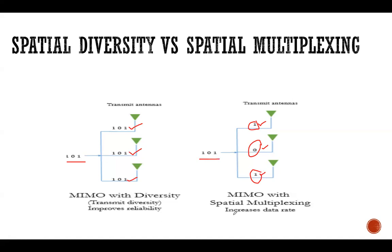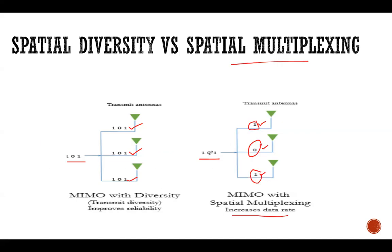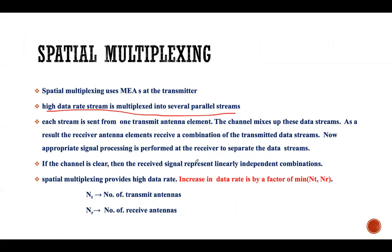By doing this, we tend to increase the data rate, and when we increase the data rate, the link capacity also increases — that is the important advantage of spatial multiplexing. Spatial multiplexing helps us to improve the data rate as well as the link capacity of the system. High data rate is multiplexed into several parallel streams, so the data is sent in the form of several parallel data streams.